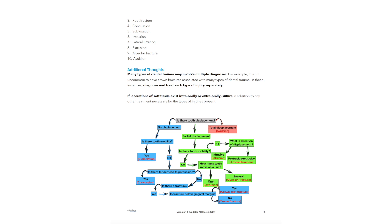You will see that the flowchart first starts by asking: is there tooth displacement? If there is no displacement, you will follow the blue section of the chart. If there appears to be some displacement, you will follow the green section. If there appears to be total displacement — the tooth has been avulsed out of the socket — you will follow the red portion of the chart. Pretty simple.